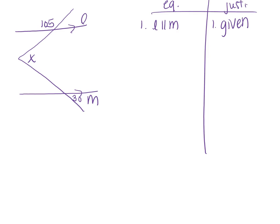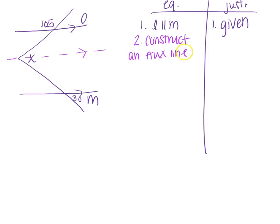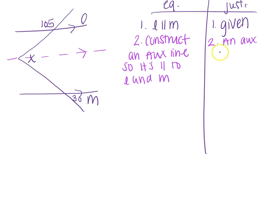You can pause this video and see if you can solve for X and make sure you justify each of your steps. I'm going to go forward and show you the solution, or one of the solutions. No matter how you start this, you should draw an auxiliary line so that it breaks up this angle X. I'm going to construct an auxiliary line so that it's parallel to L and M. My reason is: an auxiliary line can be drawn.